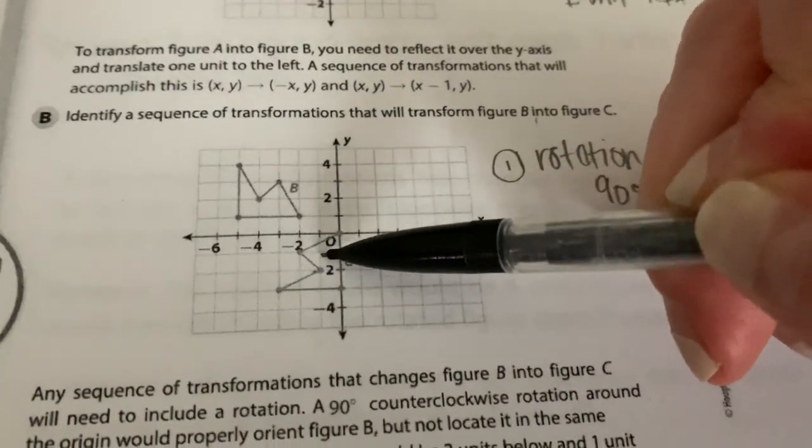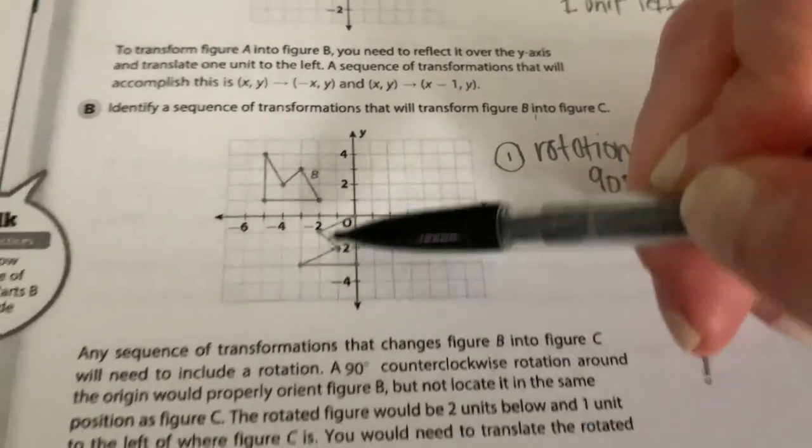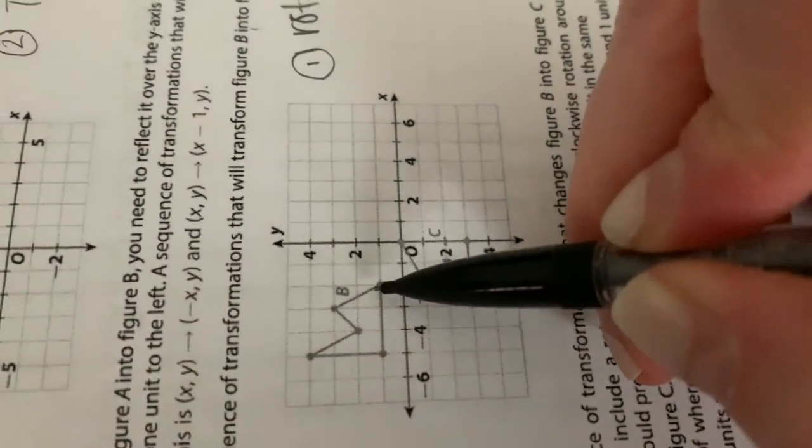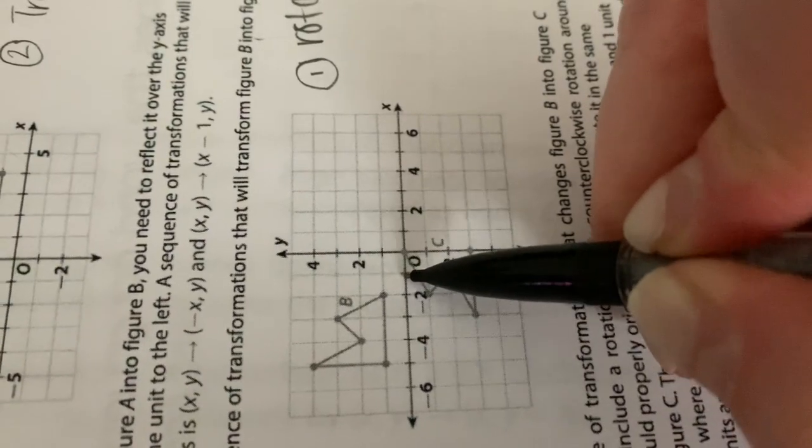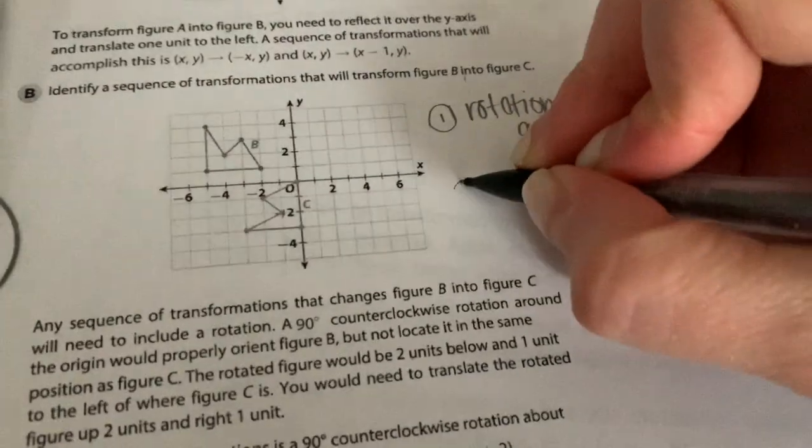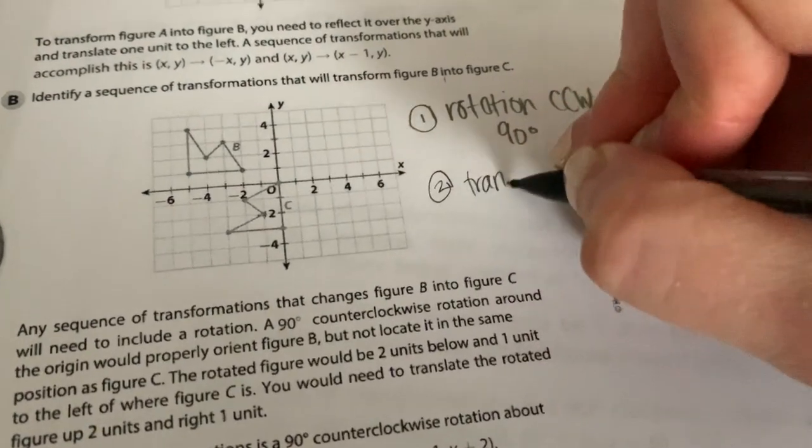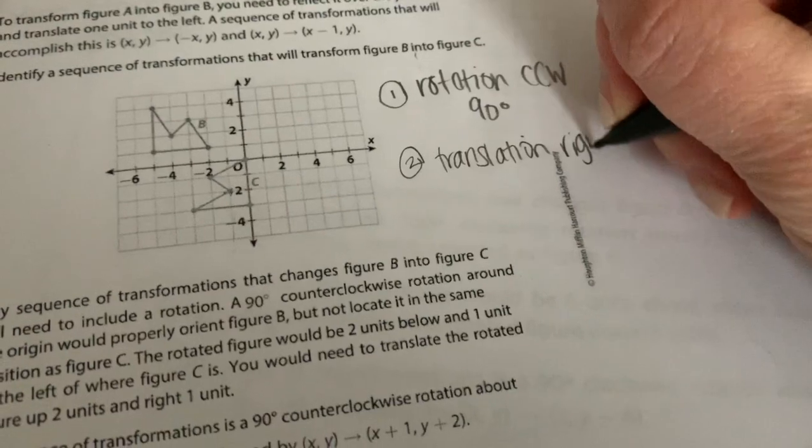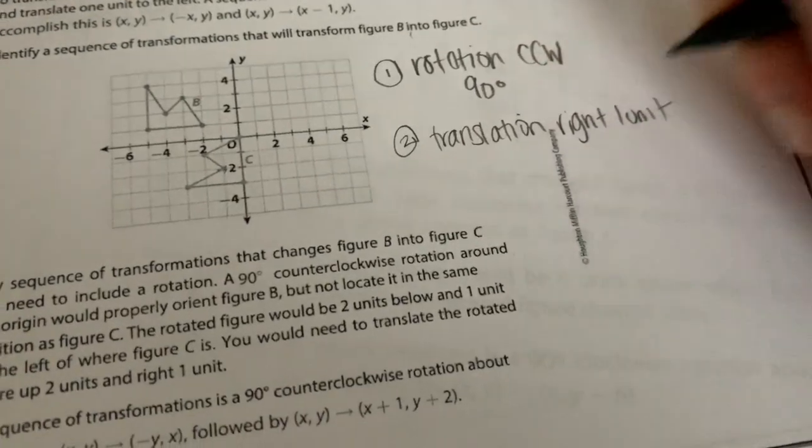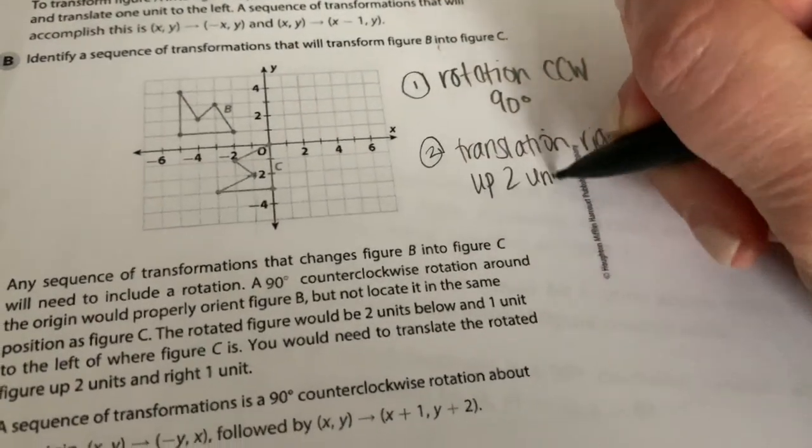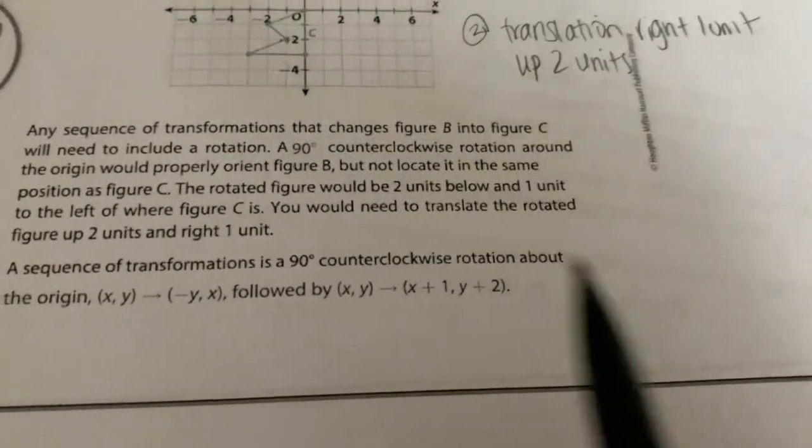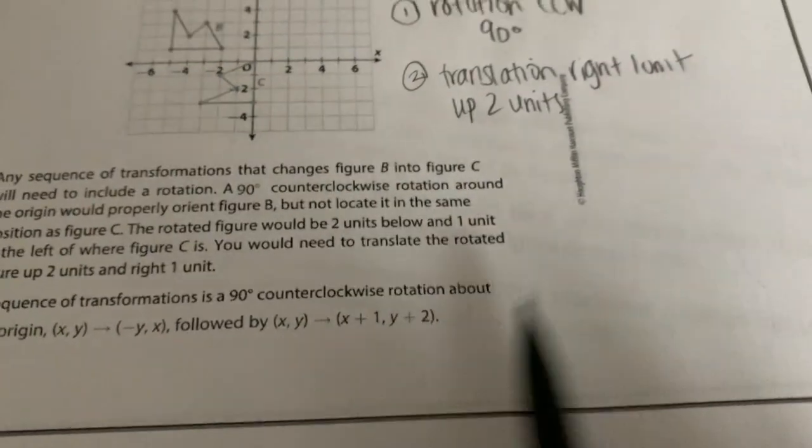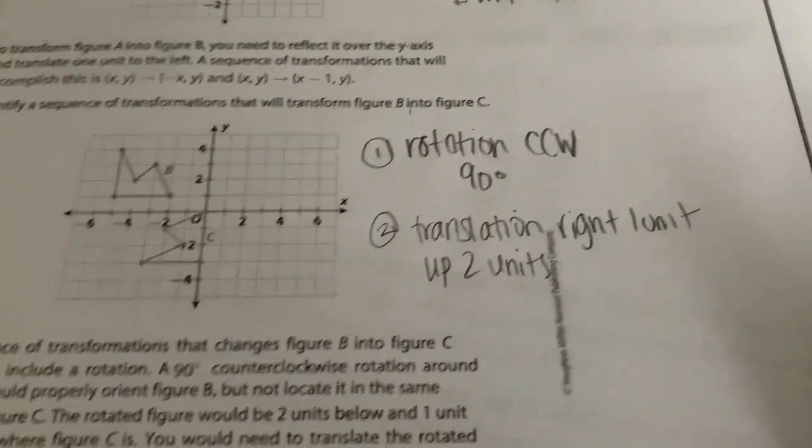That brings it down here. It was about here. So then you have to just figure out how many times you would need to move it in a translation. So you would have to move it over to the right once and then up two times. So then number two would be translation. Write one unit and then up two units. Written algebraically, you could write that plus one and plus two. And that's it.